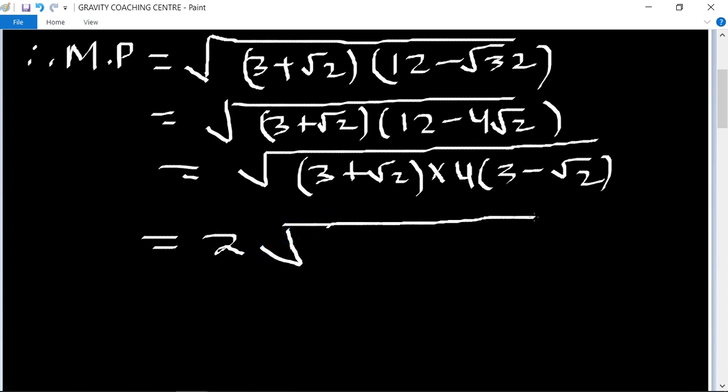a plus b into a minus b equals a square minus b square, which means 3 square minus root 2 square.